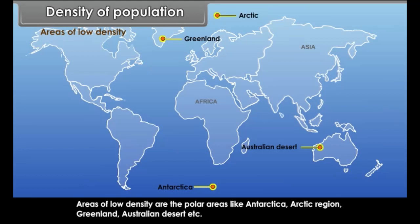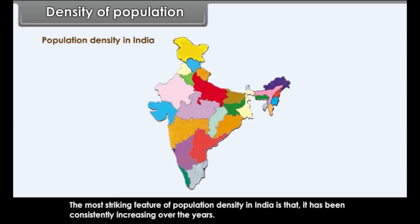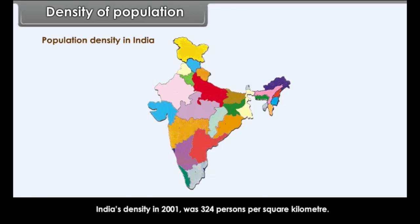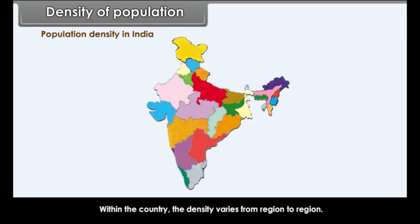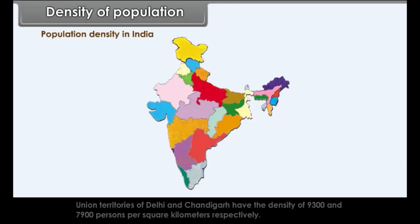Population Density in India: India is one of the most densely populated countries in the world. Population density has been consistently increasing over the years. India's density in 2001 was 324 persons per square kilometer. Union territories of Delhi and Chandigarh have densities of 9,300 and 7,900 persons per square kilometer respectively, whereas Arunachal Pradesh and Mizoram have densities of 13 and 43 persons per square kilometer respectively.